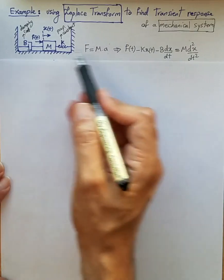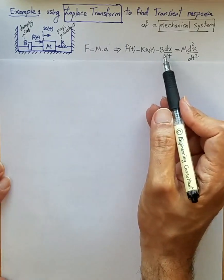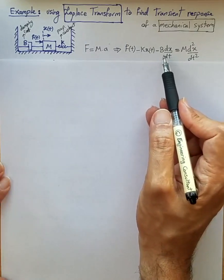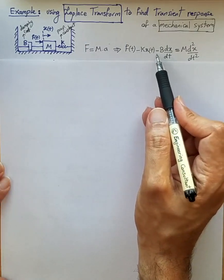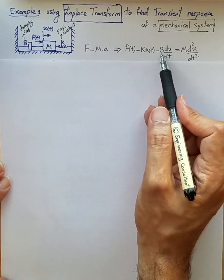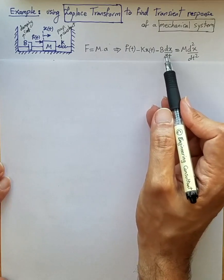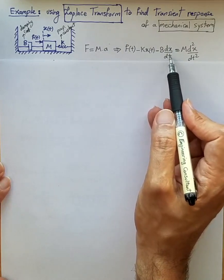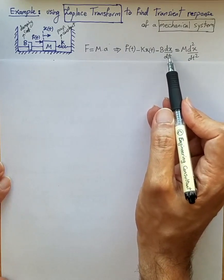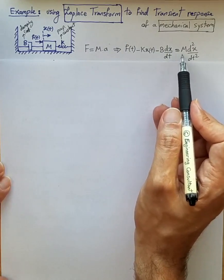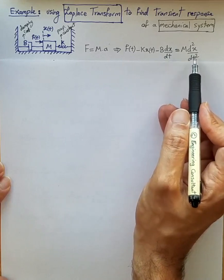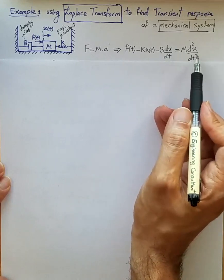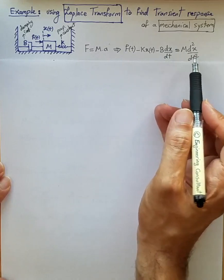Then we have the damping coefficient that applies a counter force corresponding to speed, represented by minus b times the first derivative of displacement, all equal to mass times acceleration, which is the second derivative of x.